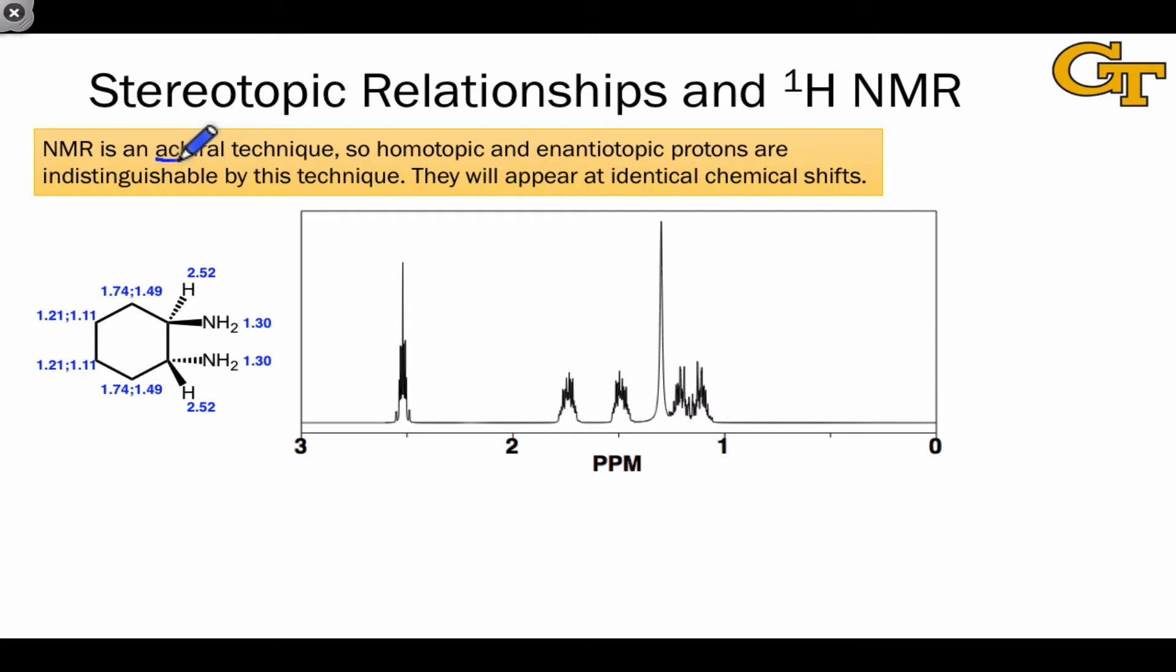NMR is an achiral technique. The radio waves used are achiral. So homotopic and enantiotopic protons are indistinguishable by this technique. This means that they have the same properties, and that they'll appear at identical chemical shifts. In other words, they'll appear to be overlapping.